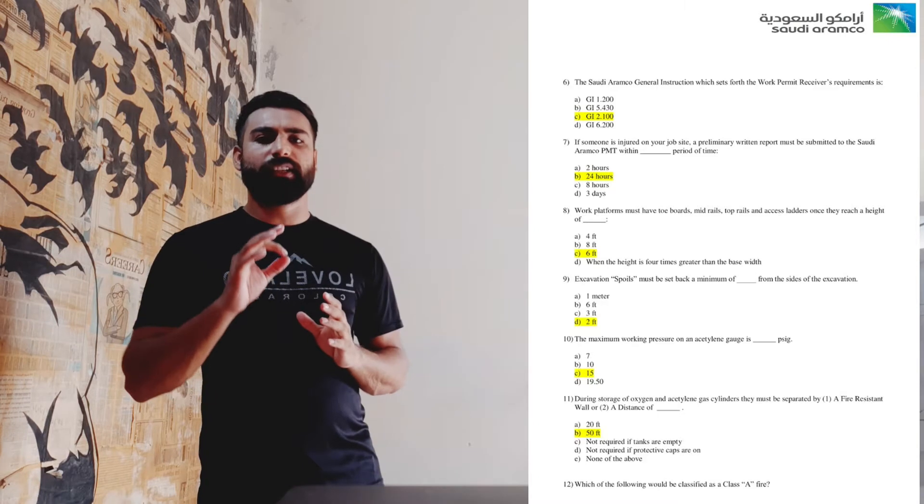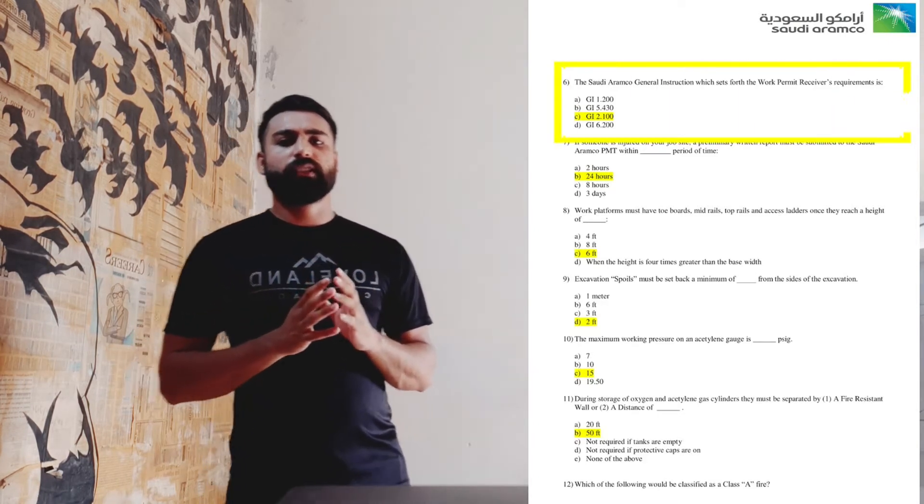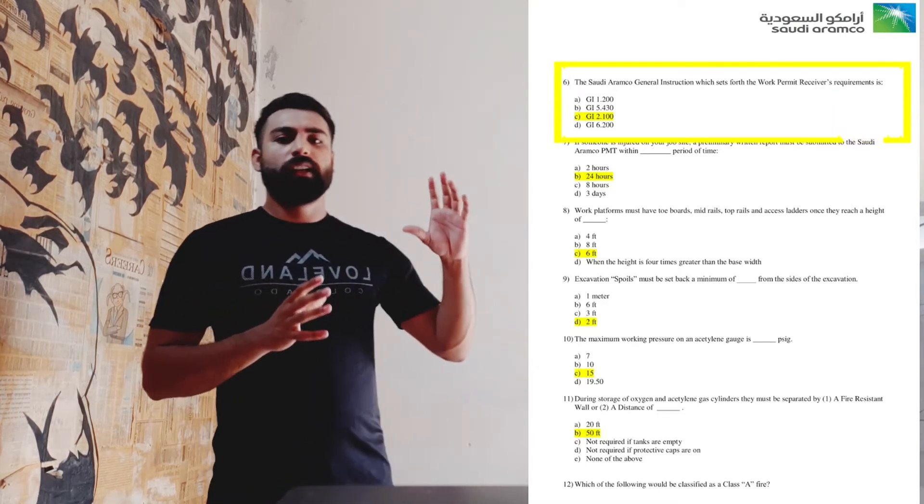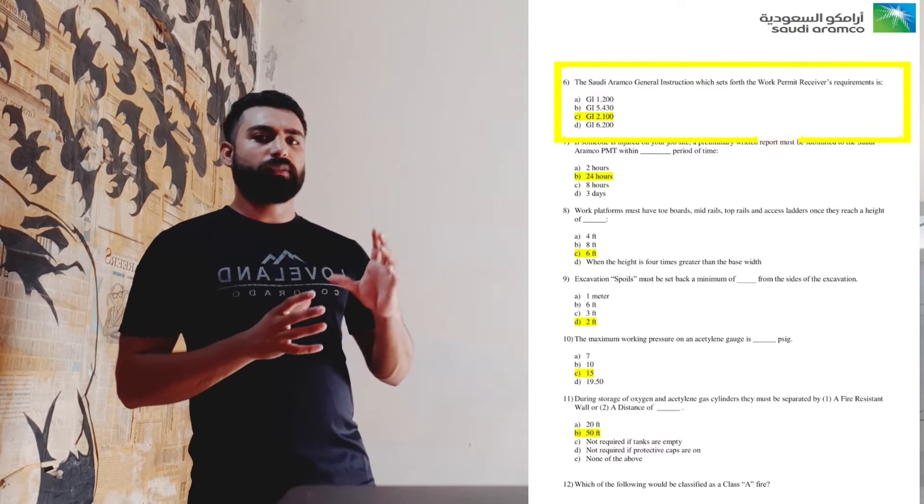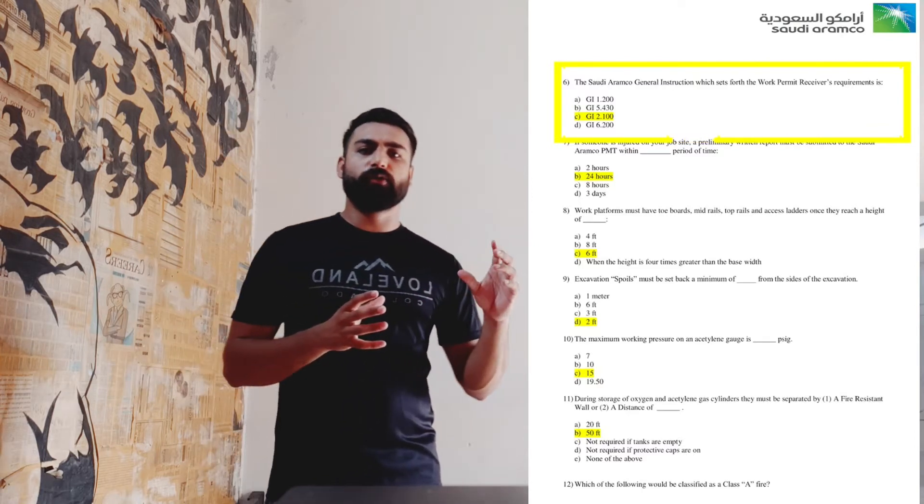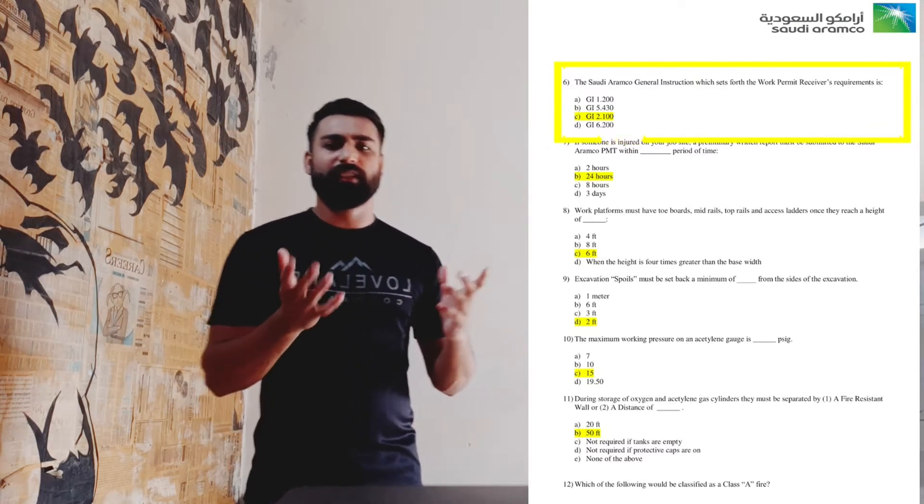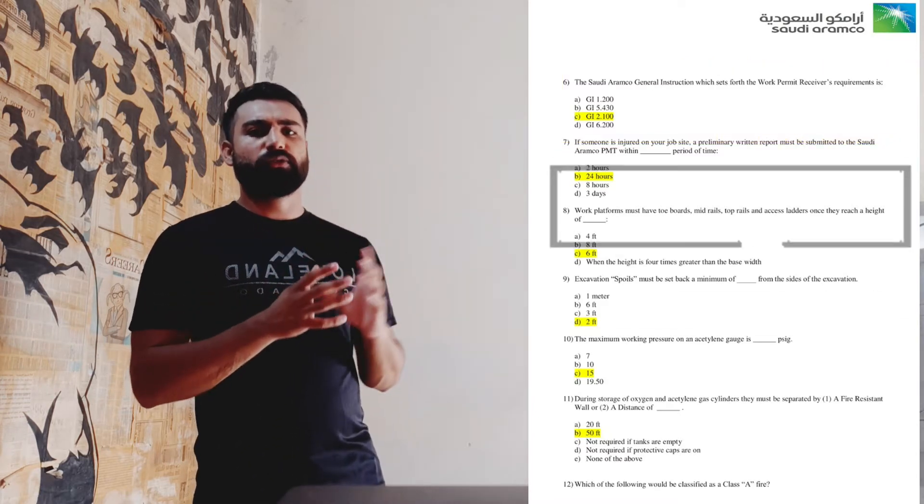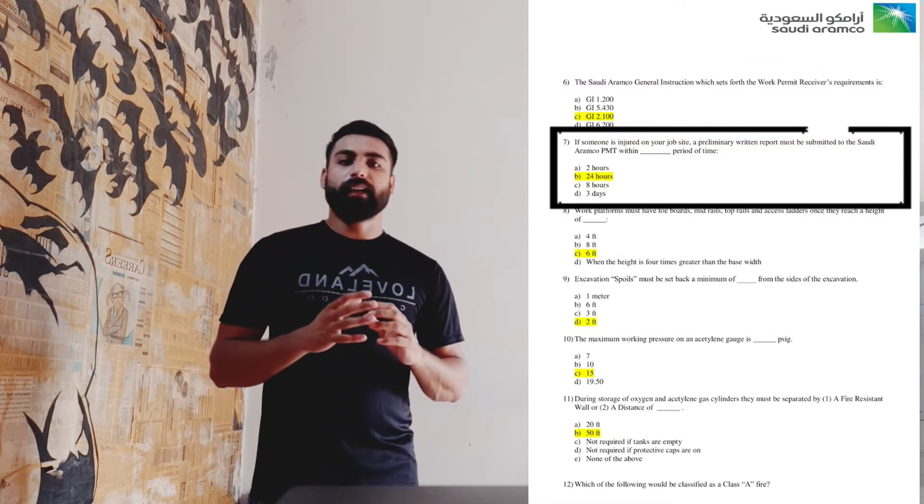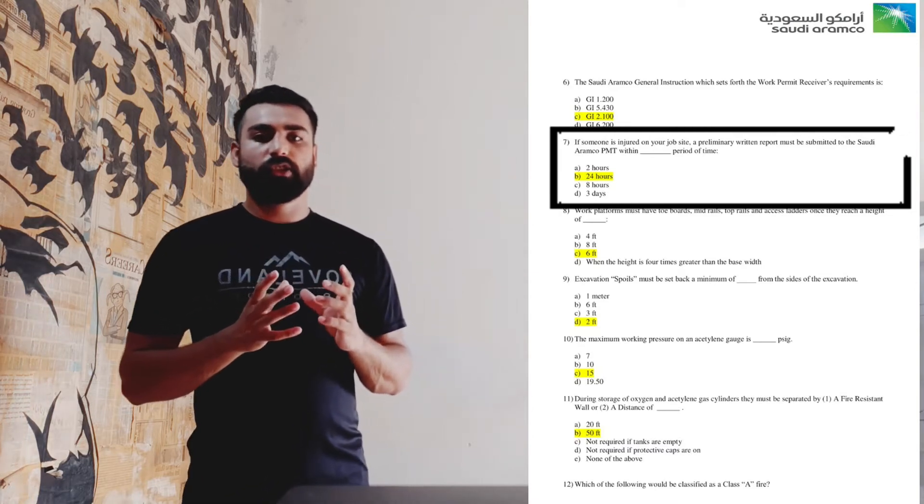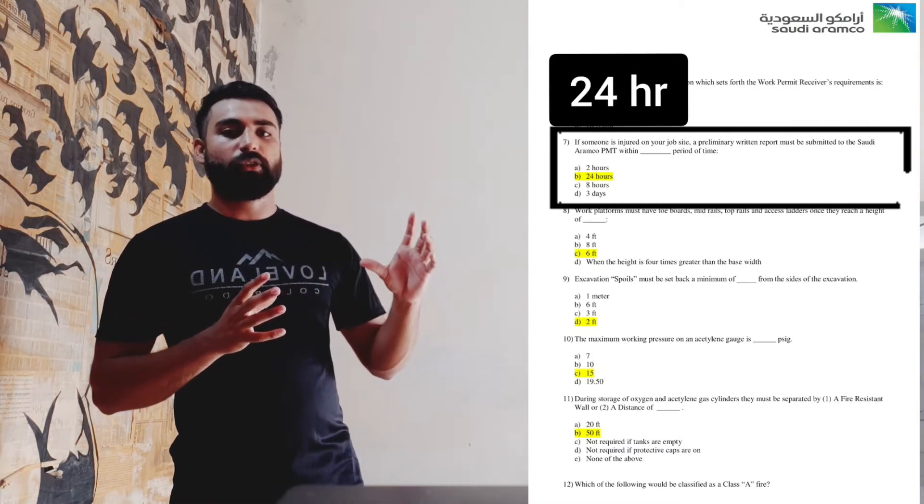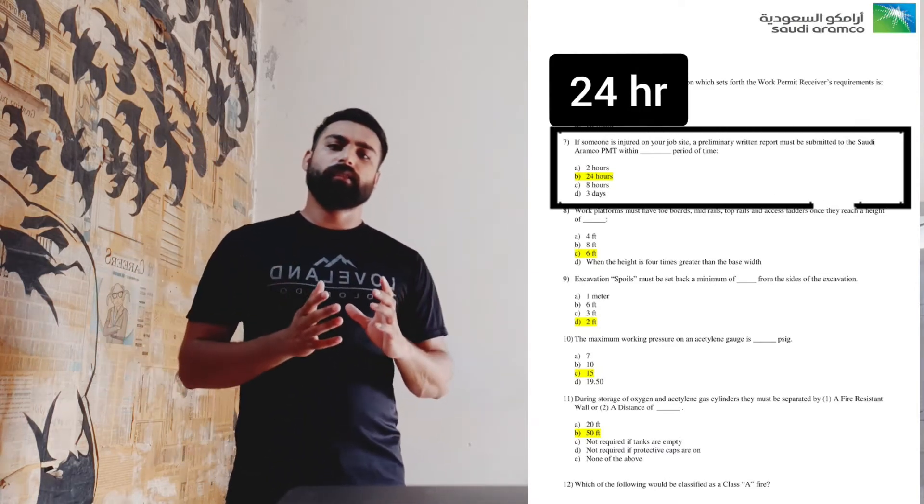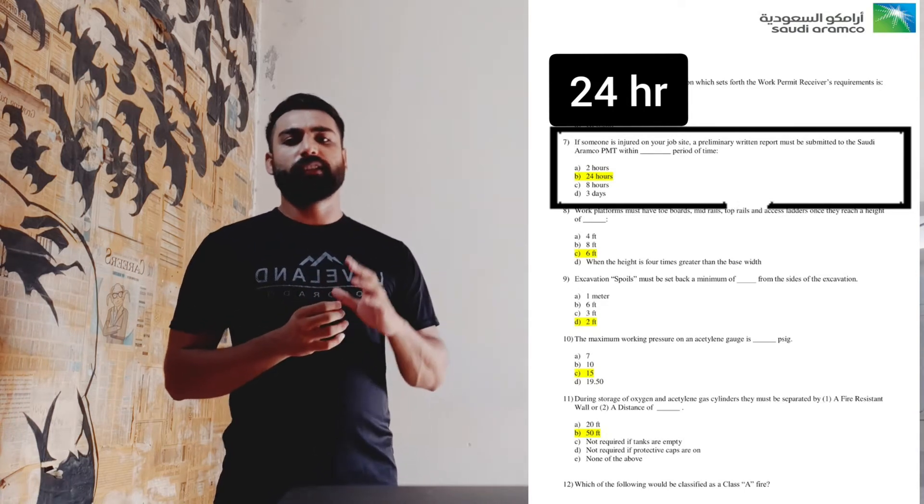Let's jump towards question number six. Question number six is particularly regarding the Aramco procedures. It is asking about the procedure number for the permit to work, that is GI 2.100. That is not a generic question; it's specific to Aramco. Question number seven is regarding the incident investigation.